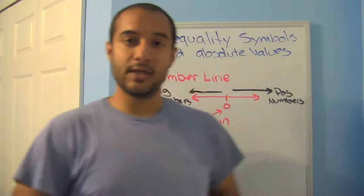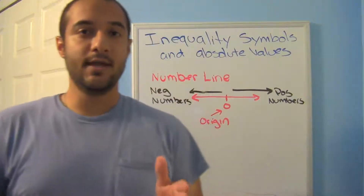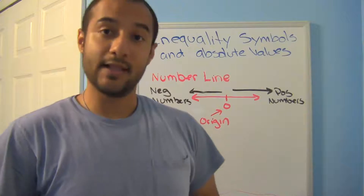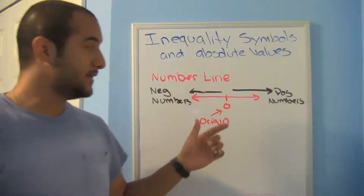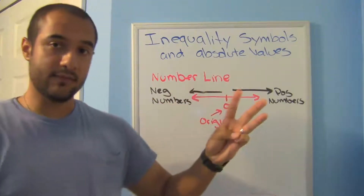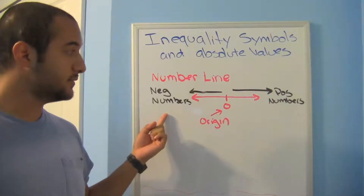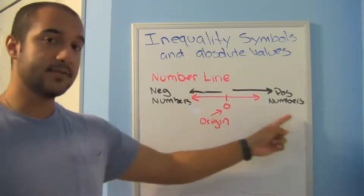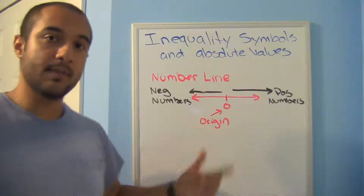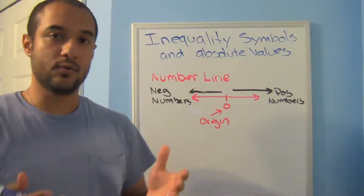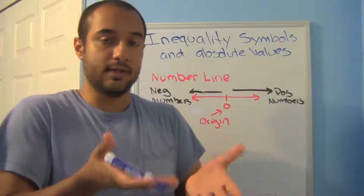Hey guys, welcome back. Today we're going to look at inequality symbols and absolute values. Let's start off with the number line. The number line is made up of three different parts: negative numbers, positive numbers, and the origin. Think about what the word origin means — origin means where things start, where they come from.